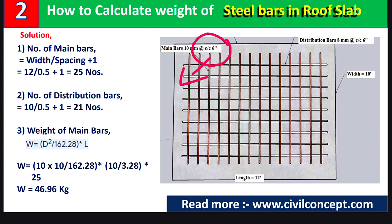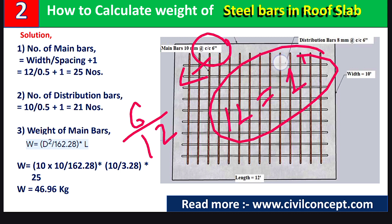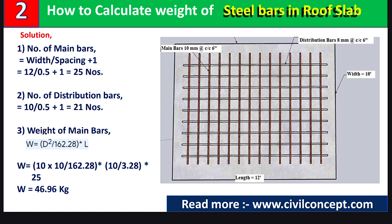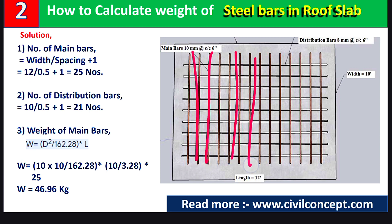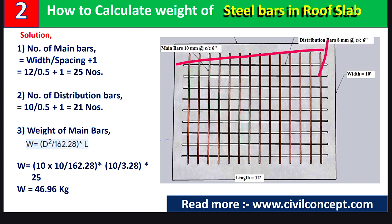The spacing is 6 inches. Converting to feet: 6 divided by 12 equals 0.5 feet. So number of main bars equals 12 divided by 0.5, plus 1, which gives us 25 number of main bars required for the 12-foot slab.